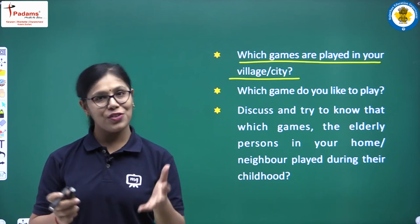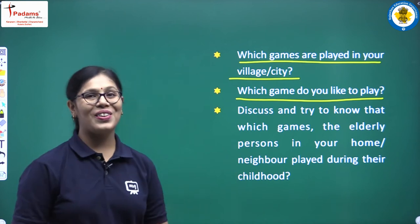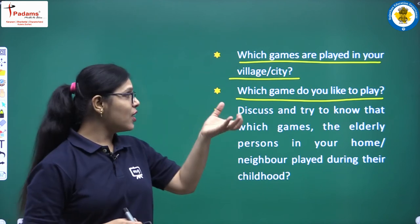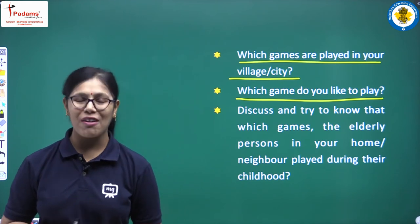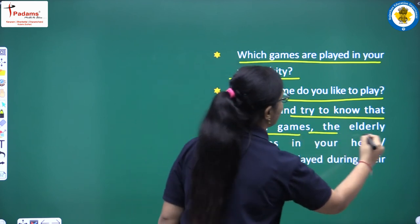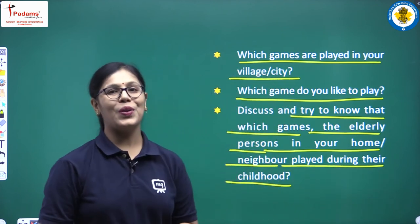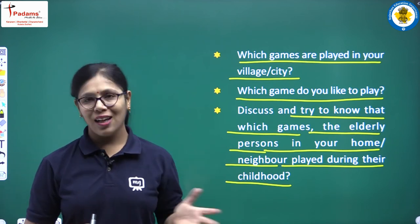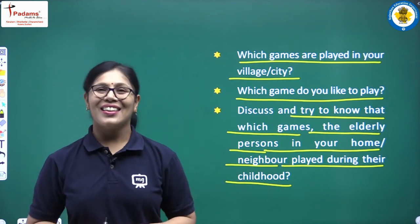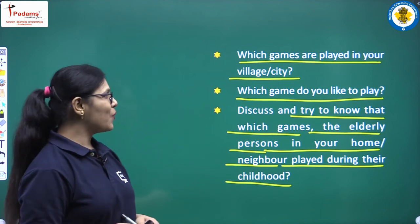The second question is: which game do you like to play? Each of you must have a favourite game, so think about which game you like most and share it with your parents. The third question is: discuss and try to find out which games the elderly persons in your home or neighbourhood played during their childhood. Talk to your grandparents or neighbours and ask what games they used to play when they were young.